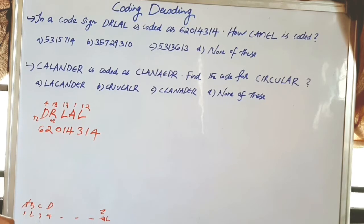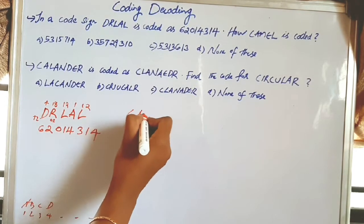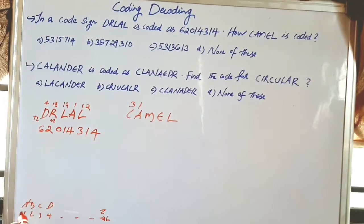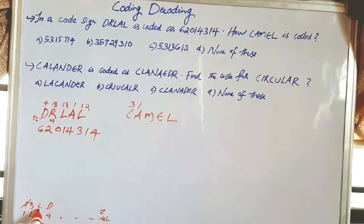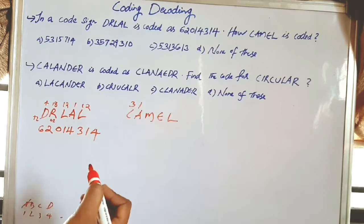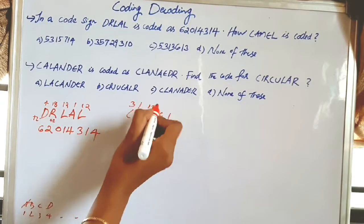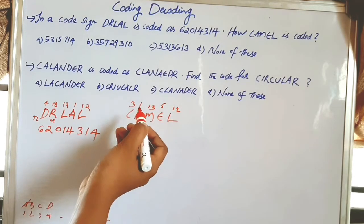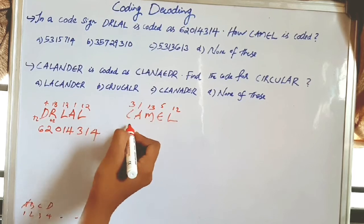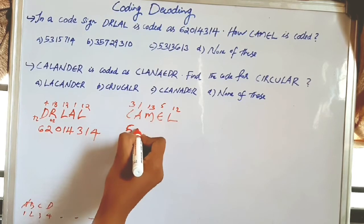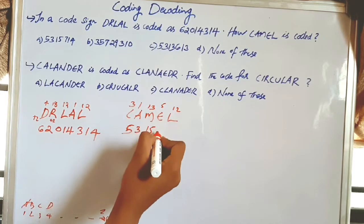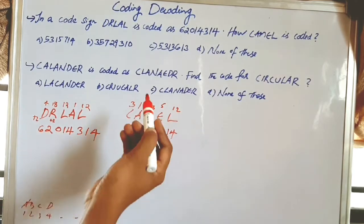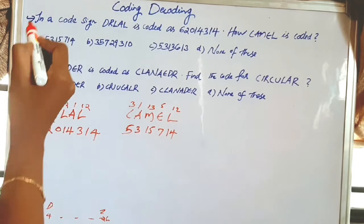Now let's code CAMEL using the +2 rule. C=3, A=1, M=13, E=5, L=12. Adding 2 to each: 3+2=5, 1+2=3, 13+2=15, 5+2=7, 12+2=14. So CAMEL is coded as 5315714. The answer is Option A.